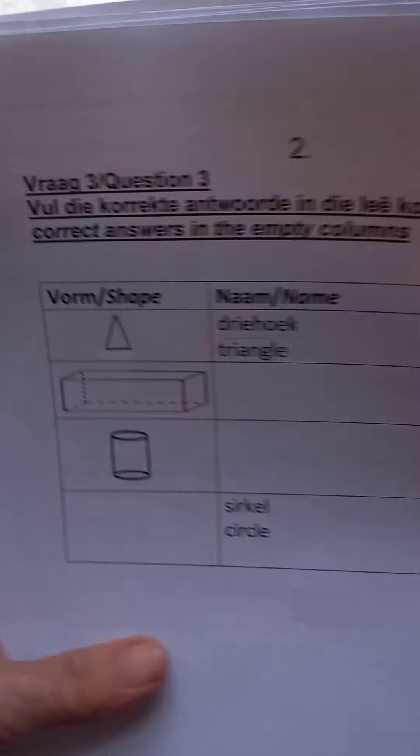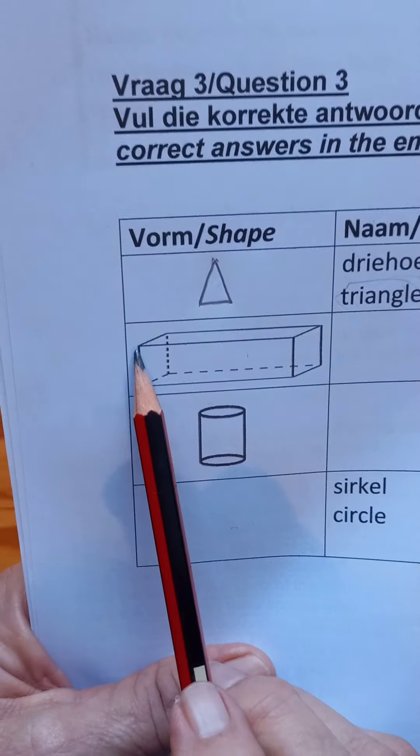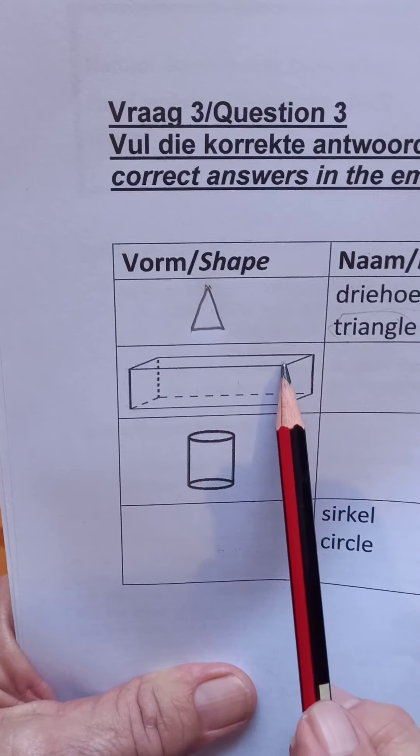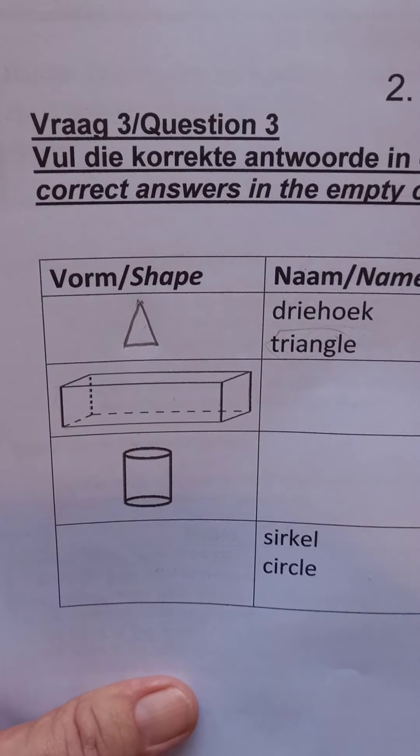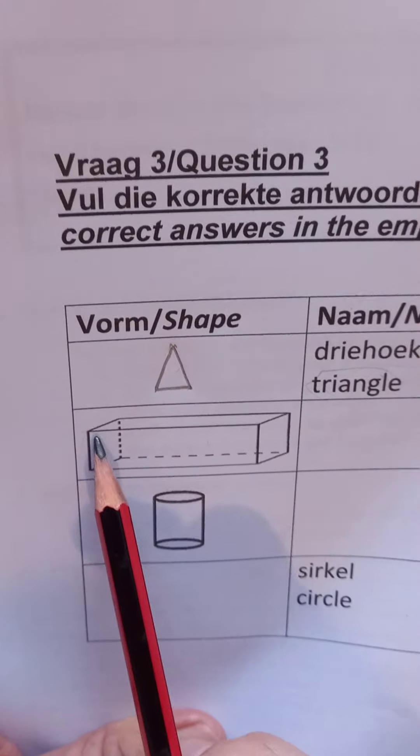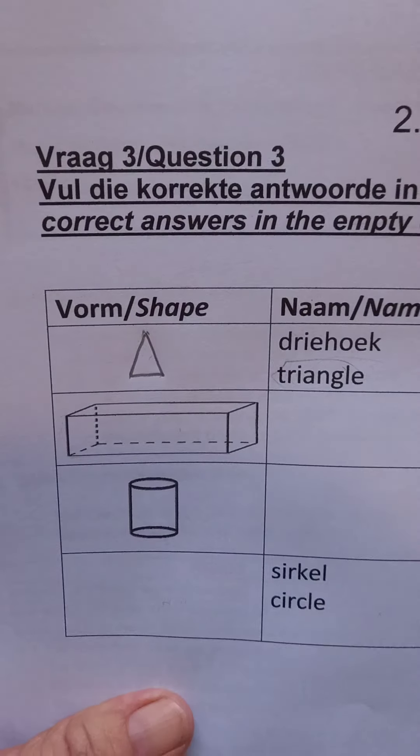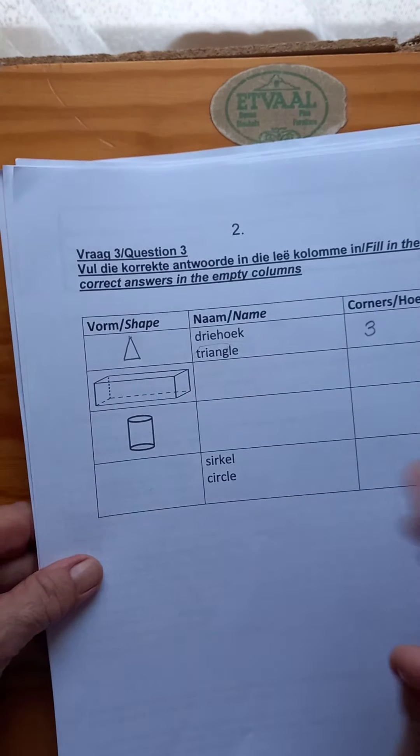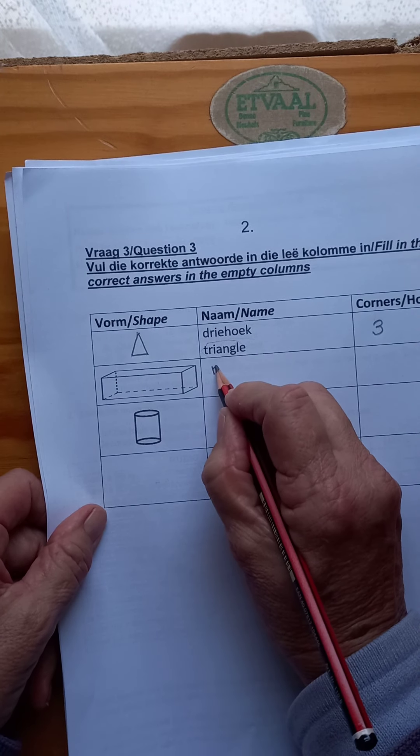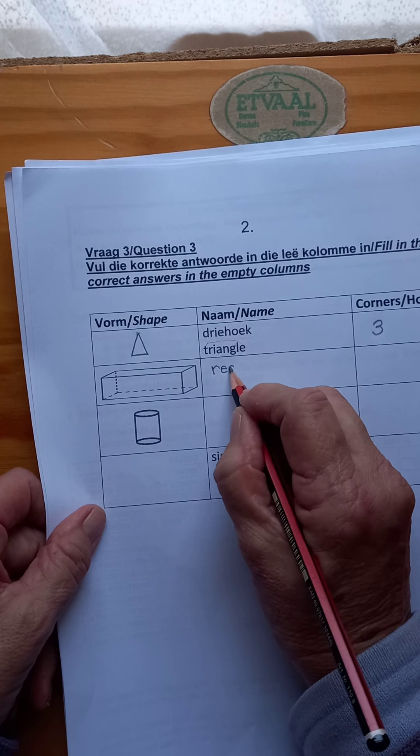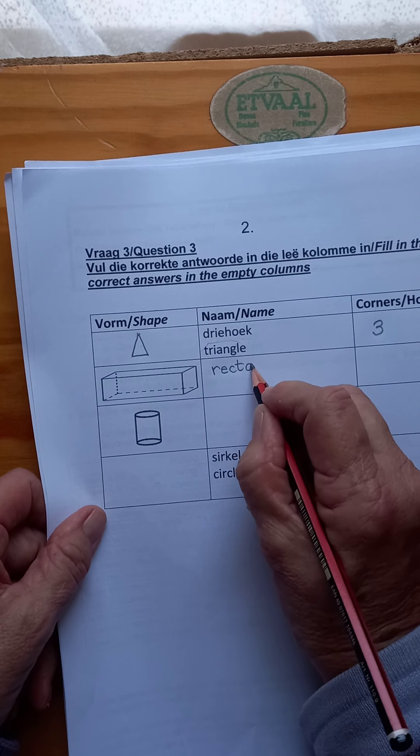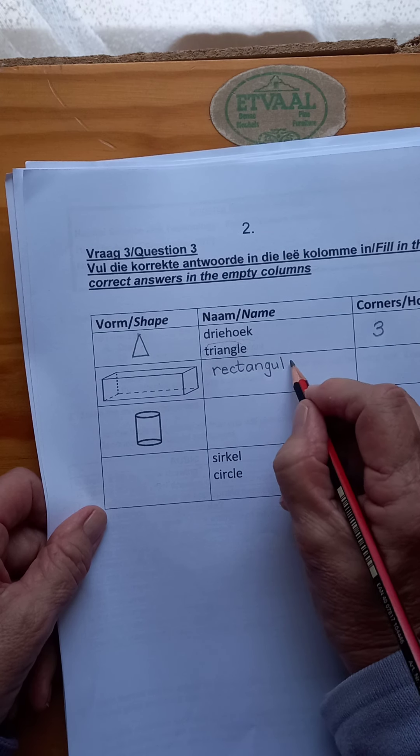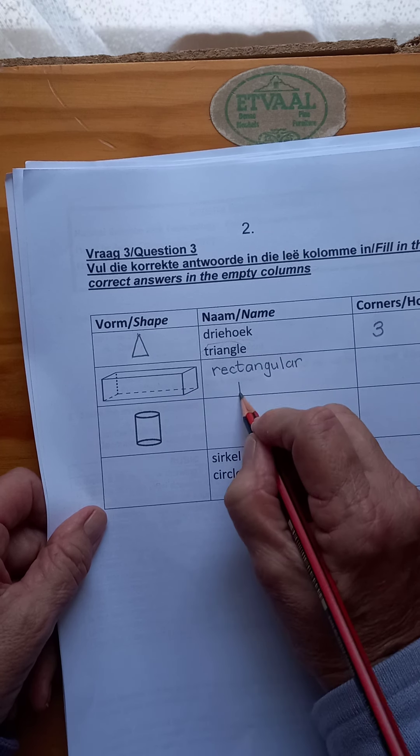Now what is this shape? If you look at this part here, the front part, what can you see? It is a rectangle. But now this is not only a rectangle, it is now a 3D shape. So the one part of it is a rectangle, but you say rectangular prism.